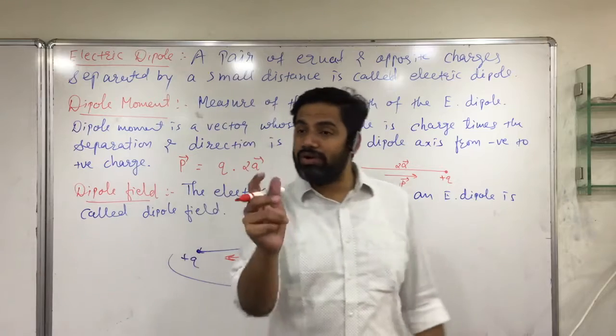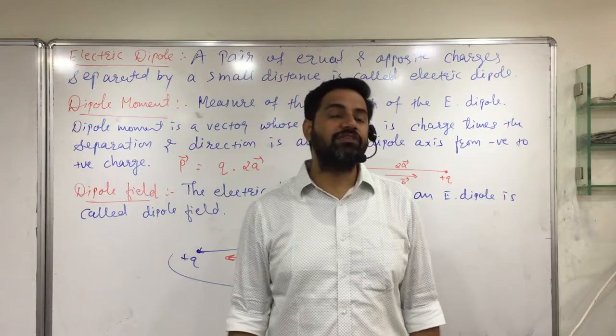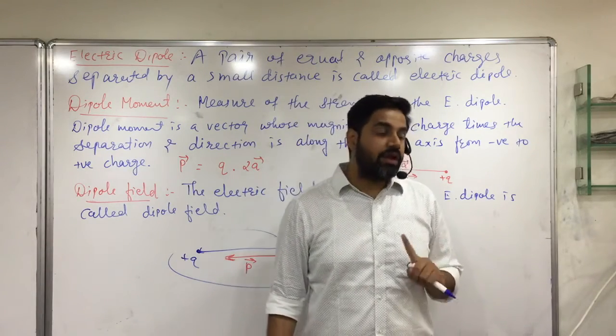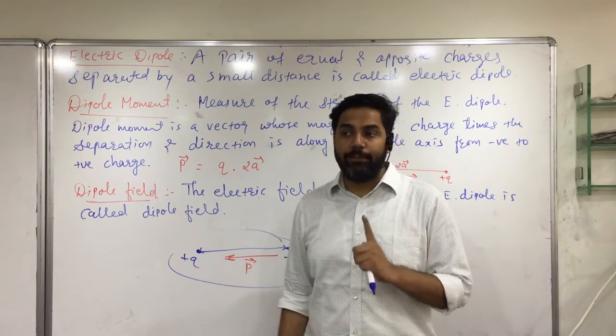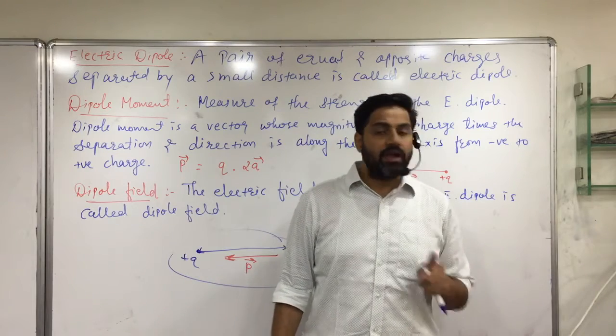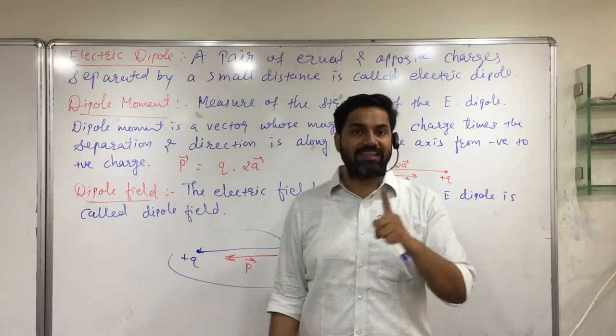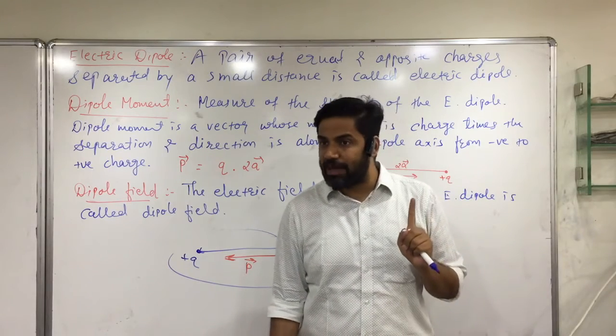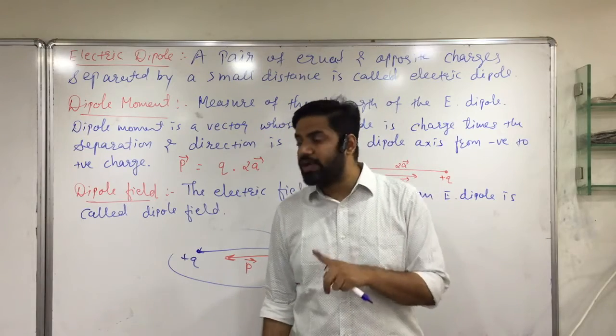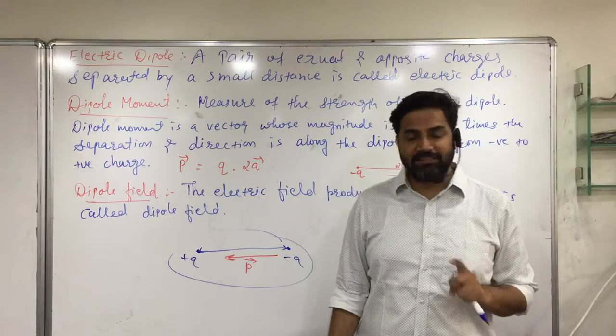But what do some people say? Positive to negative. This is a little bit different. It doesn't need to be dipole direction, it's the dipole moment direction. From where to where? From negative charge to positive charge. Don't get confused. The direction is always negative to positive when it comes to a dipole. Clear?